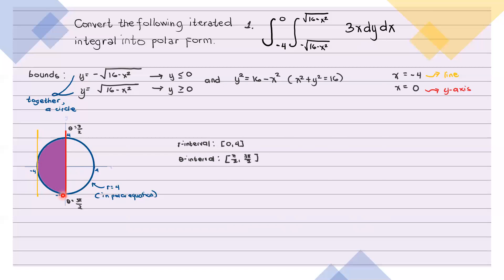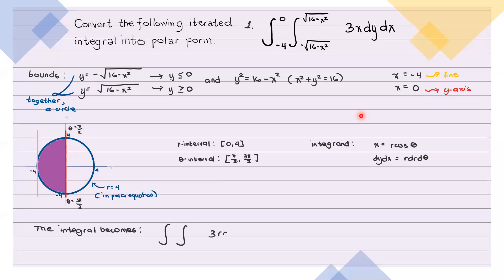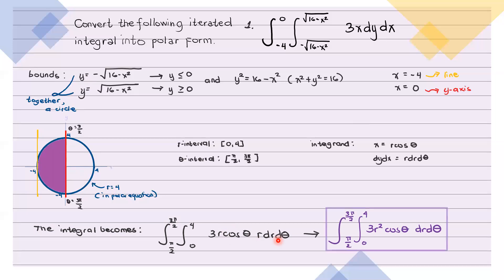Now, pamalit naman sa integrand — ang integrand ay 3x. Si x, pwede natin palitan ng r cosine theta. Si dy dx naman, siya yung lumalabas na dA, so papalitan natin yan ng r dr d theta. Hence, the integral becomes a double integral of 3r cosine theta · r dr d theta, with the inner integral with respect to r from 0 to 4, and the outer integral with respect to theta from pi over 2 to 3 pi over 2. Simplify lang natin yung integrand kasi r times r ay r squared lang — so we have the following, and this is our final answer. But if you want to proceed to integration, you can verify that this is equal to negative 128.